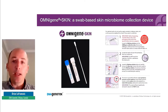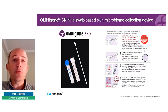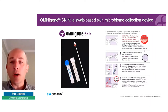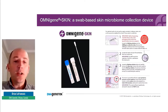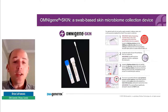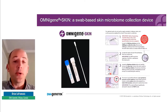So we decided to leverage our knowledge at DNA Genotech, and we developed OmniGene Skin, which is a swab-based collection device. It's very simple — it consists of a flocked swab with a breaking point, an OmniGene collection tube containing one milliliter of a stabilization solution, as well as a wetting agent. The IFUs are provided with each kit, and we spent quite a bit of time working on them, because to get good quality skin samples, you really need the end user to collect as well as possible.